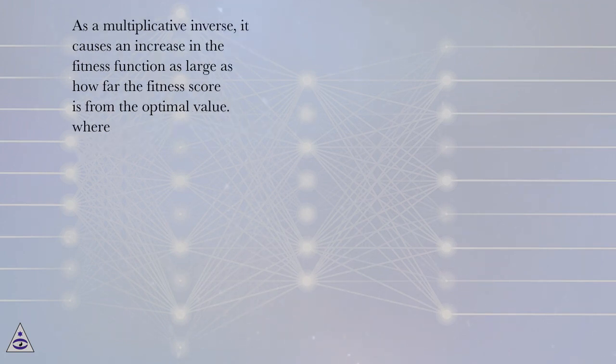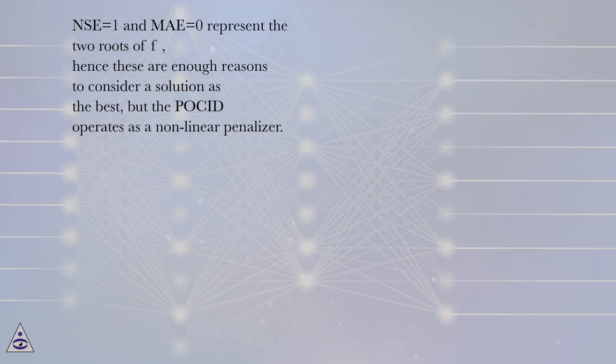As a multiplicative inverse, it causes an increase in the fitness function as large as how far the fitness score is from the optimal value. Where NSE equals 1 and MAE equals 0 represent the two roots of F, hence these are enough reasons to consider a solution as the best, but the POCID operates as a nonlinear penalizer.